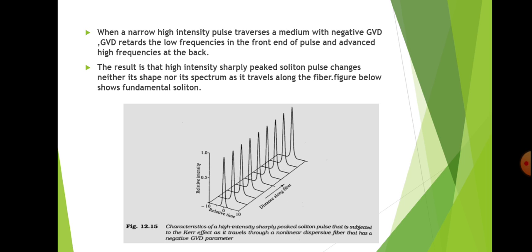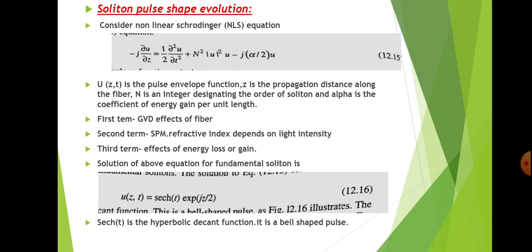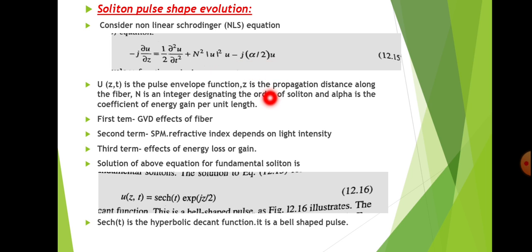To get the equation for the soliton pulse, we consider the non-linear Schrödinger equation (NLS equation), which has the form: -j ∂u/∂z = (1/2) ∂²u/∂t² + n² |u|² · u - j(α/2) · u. This is the non-linear Schrödinger equation, where u(z,t) is the pulse envelope function and z is the propagation distance along the fiber.